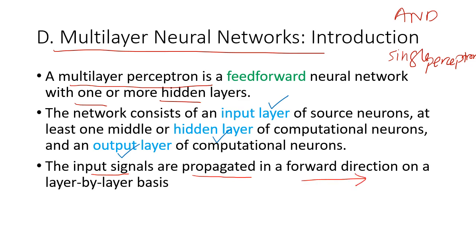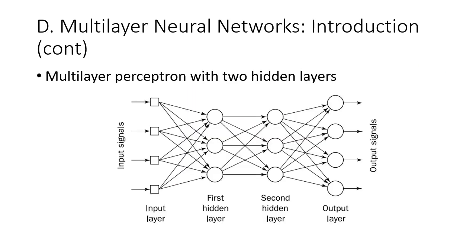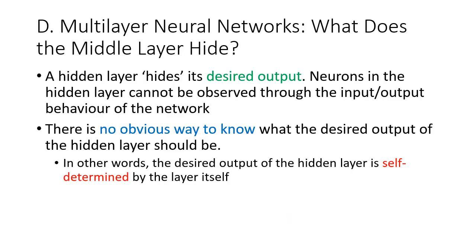Input signals from the input layer will be propagated in a forward direction on a layer-by-layer basis. This is an example of a multi-layer neural network with four layers: layer one, two, three, and four. Layers two and three are the hidden layers, and the weights and outputs of these layers are hidden from us.